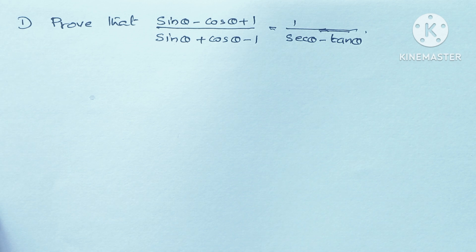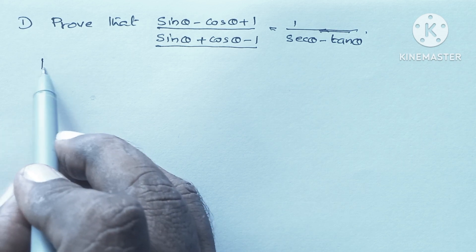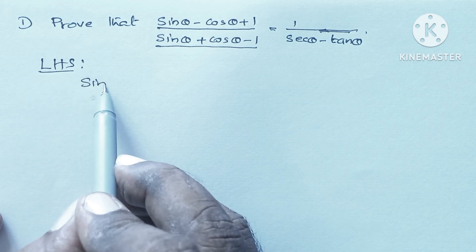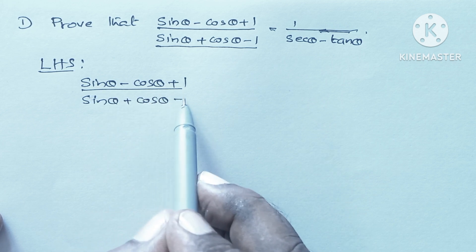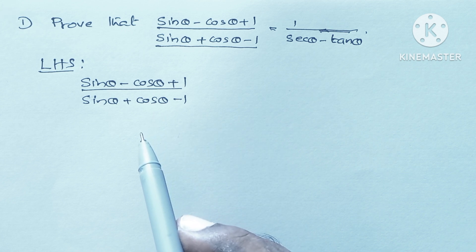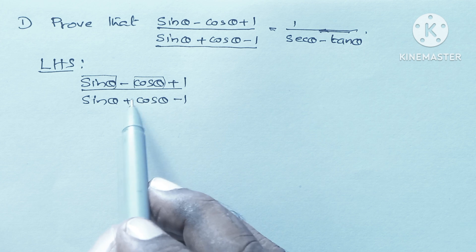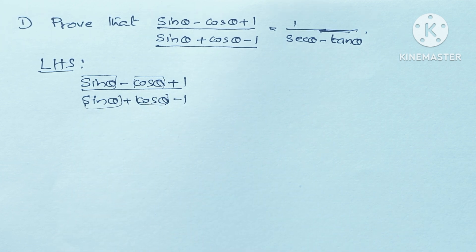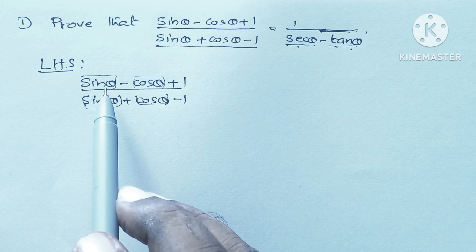So let's consider our left hand side. The left hand side is (sin θ - cos θ + 1) / (sin θ + cos θ - 1). When you consider this kind of question, we won't be able to continue the process with sin θ and cos θ, so we need to convert them into the form of tan θ, sec θ, etc., because the RHS is the combination of sec θ and tan θ.